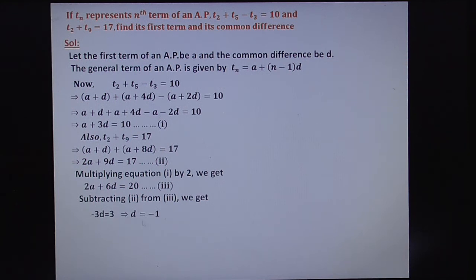9D minus 6D is 3D, 17 minus 20 is minus 3, 3D equals minus 3, D equals minus 1. Now substitute D equals minus 1 in any one of these three equations. Here, I am substituting D equals minus 1 in equation 1. What is your target? Find A and its common difference. Here, we already got D value, that is common difference minus 1.